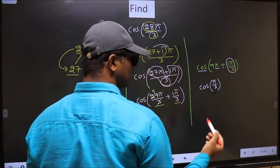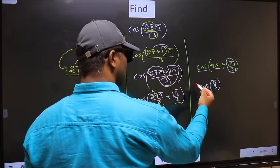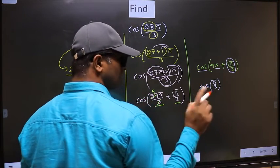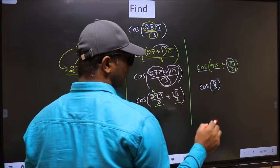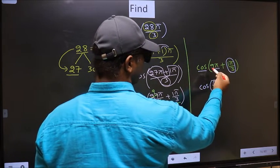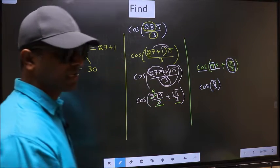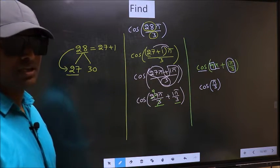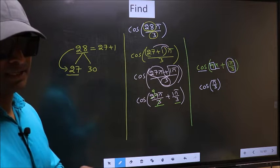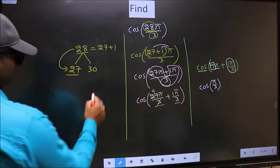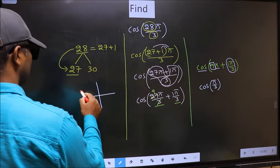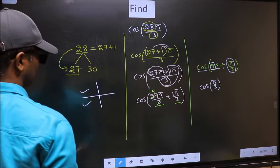Now the question is: will we get here plus or minus? To answer that, you should look at the number before π, which is 9. And 9 is odd. All the odd multiples of π lie in either the second or the third quadrant.